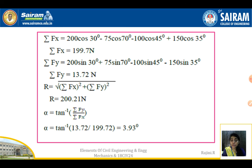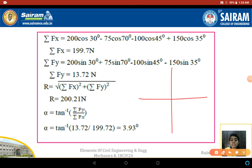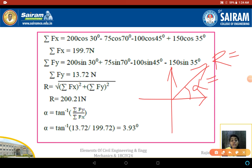Substituting into the resultant formula gives R = 200.21 N. Then alpha = tan⁻¹(13.72 / 119.72) = 3.93°. To fix the resultant in a quadrant: ΣFx is positive and ΣFy is also positive, so the resultant force lies in the first quadrant. This is the way of solving and fixing the resultant force in a coplanar concurrent force system. Thank you.